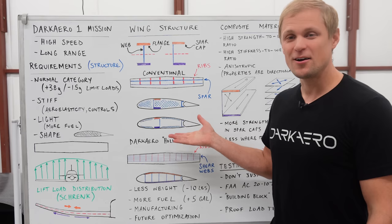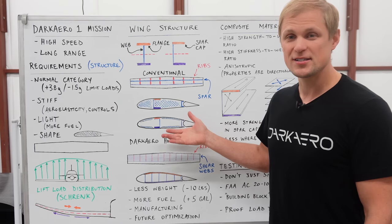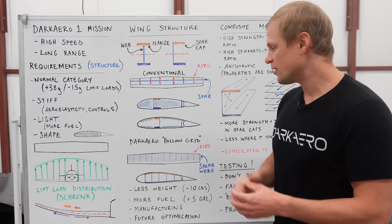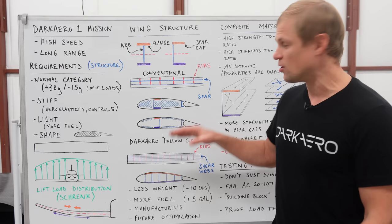We actually did start out with a standard composite wing design, and then as we were working through the design, figuring out the arrangement of the structure and calculating stresses and how heavy it would be, we came up with this hollow grid idea and pursued it in parallel.